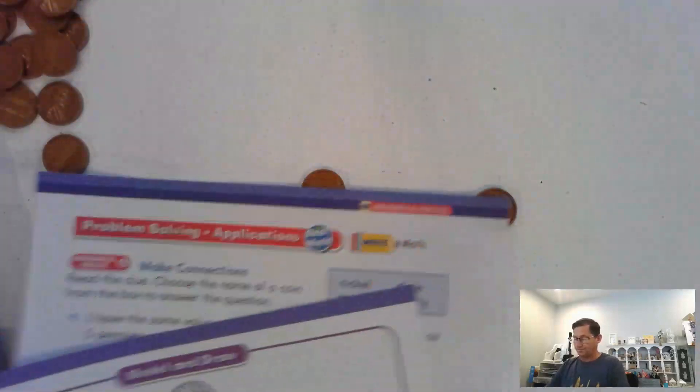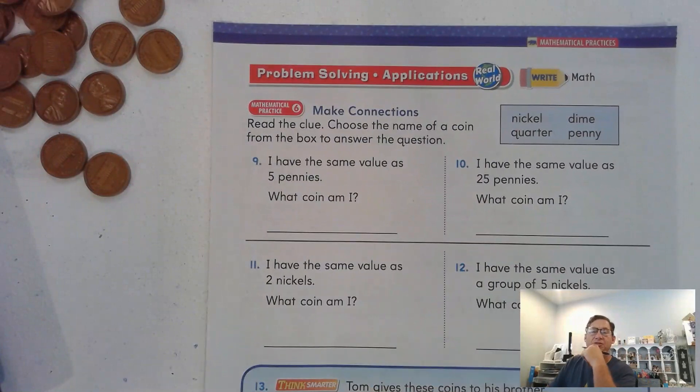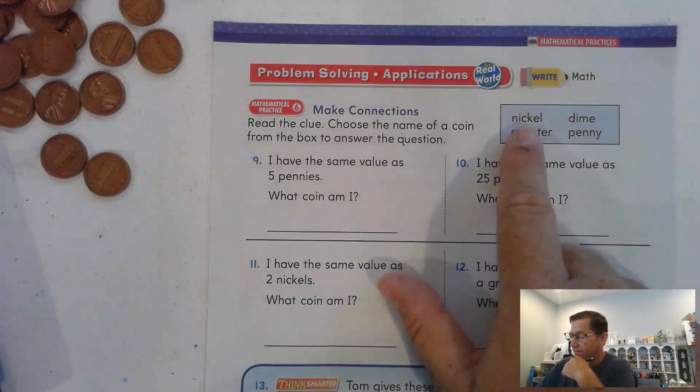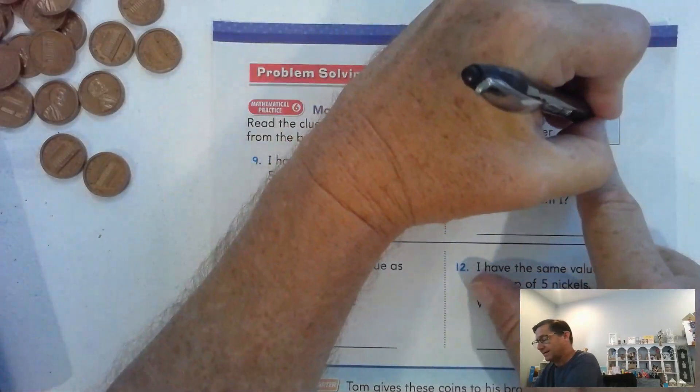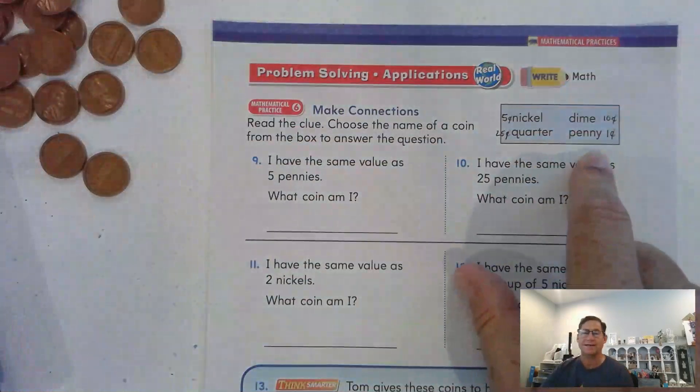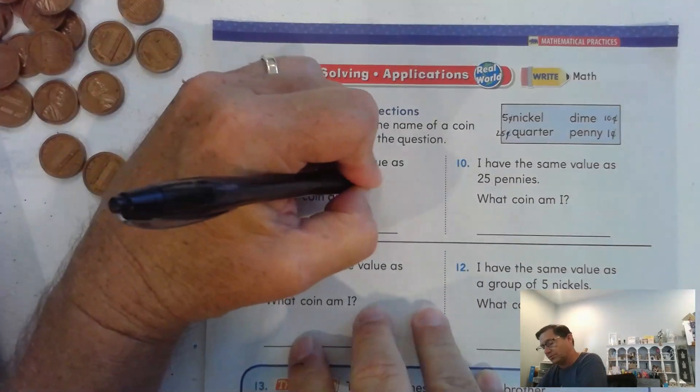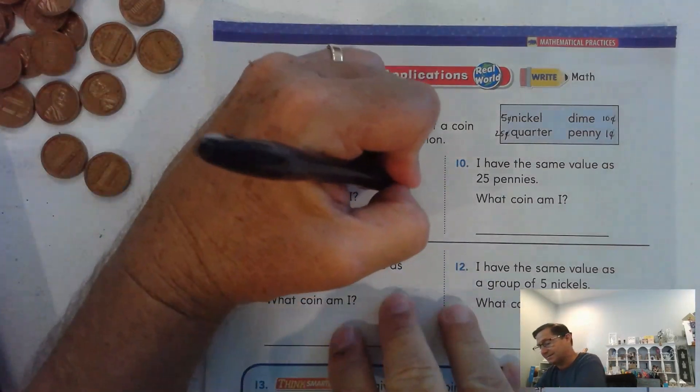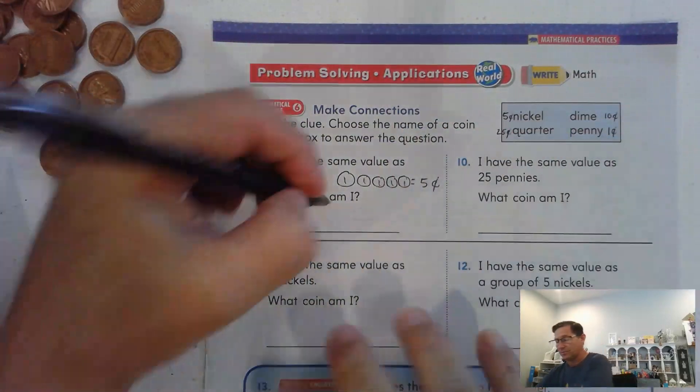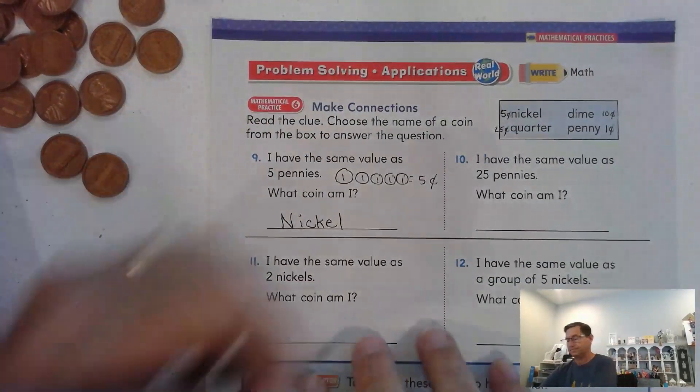Let's look at page 350. Read the clue and then choose the name of a coin from the box to answer the question. We have a nickel, five cents. A quarter, twenty-five cents. A dime, ten cents. And a penny, one cent. I have the same value as five pennies. Five pennies is one, two, three, four, five cents. Which coin equals five cents? A nickel.